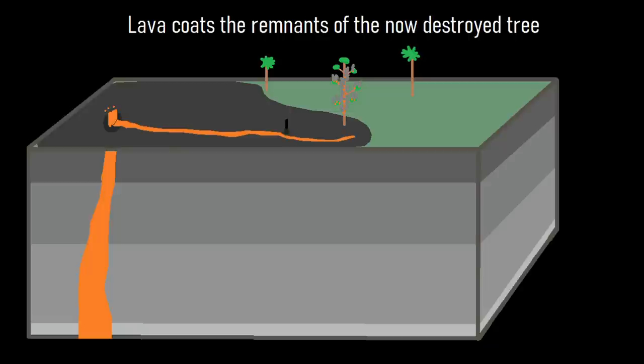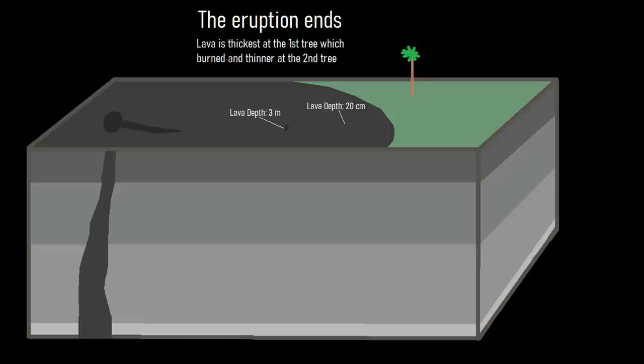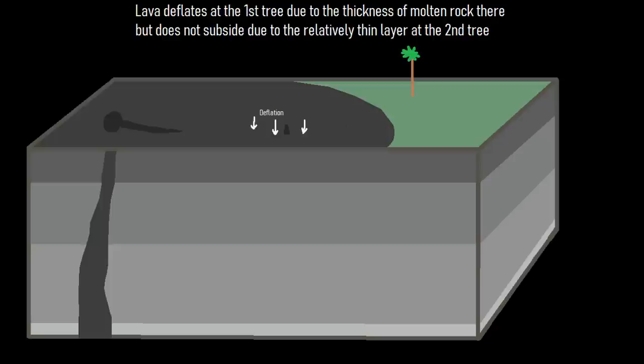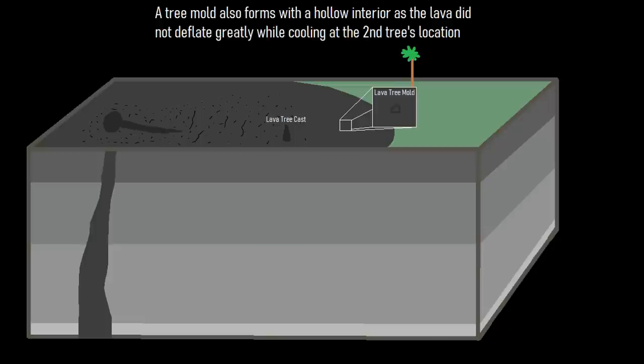A second tree catches on fire, but since it only came into contact with a thin layer of lava, there was not sufficient material to form a tree cast. Instead, the original tree burned away, and as the lava hardened, it left behind a circular depression in the ground where the tree trunk once was. After the volcanic eruption ends, the hardened lava and thicker sections of material begin to deflate, causing the surface of the lava flow to fall. This process eventually reveals additional sections of lava which coated the original tree cast.